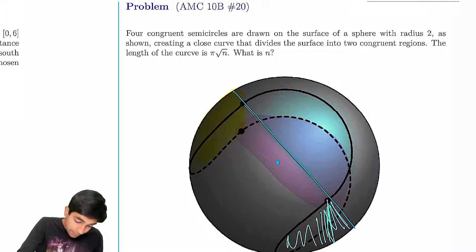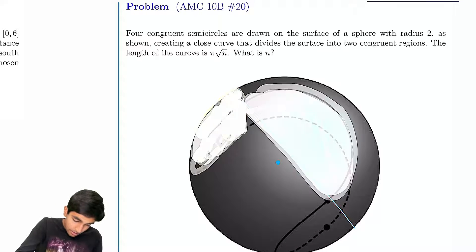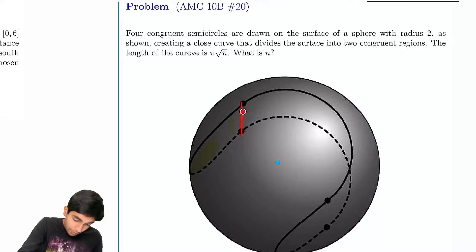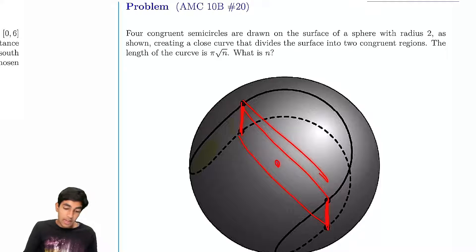And what does that mean? Well, that means the center, if this is going to be half of the sphere, the center is going to lie here. And the center is going to lie in the plane formed by these four points. You can imagine there's like a rectangle here, and the center is going to lie there.